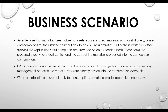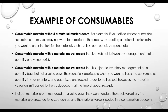When a material is procured directly for a consumption account, we don't need a material master record. For example, consumable materials without a material master record include items such as clay, pen, pencil, and staplers — these are office supplies for which we don't need a material master record.